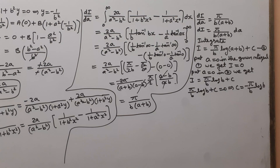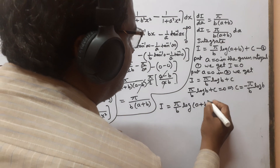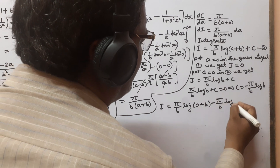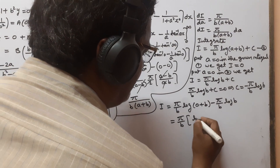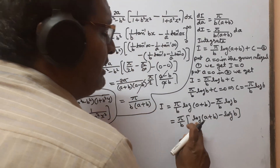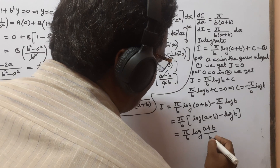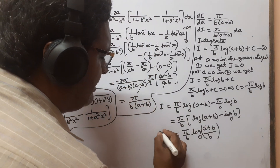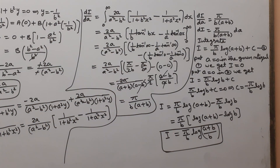We put the value of integration constant C in equation 2. We get I = (π/b)log(a + b) - (π/b)log(b). Taking (π/b) as common and using log M - log N = log(M/N), this gives I = (π/b)log[(a + b)/b]. This is the value of the given integral. Thank you.